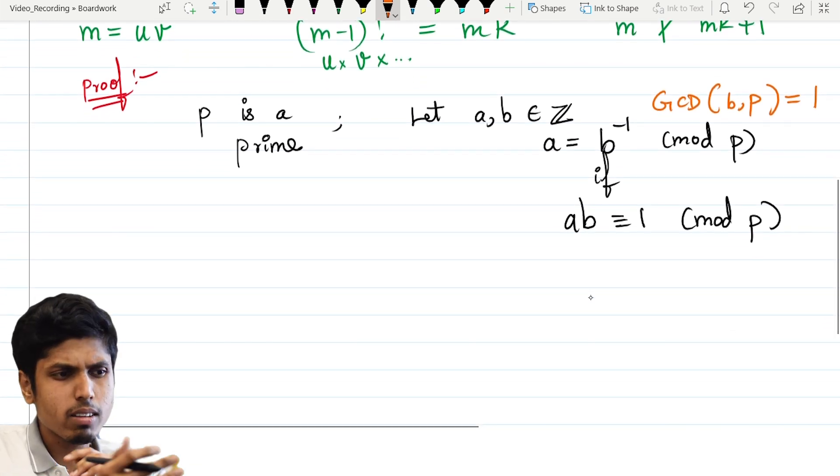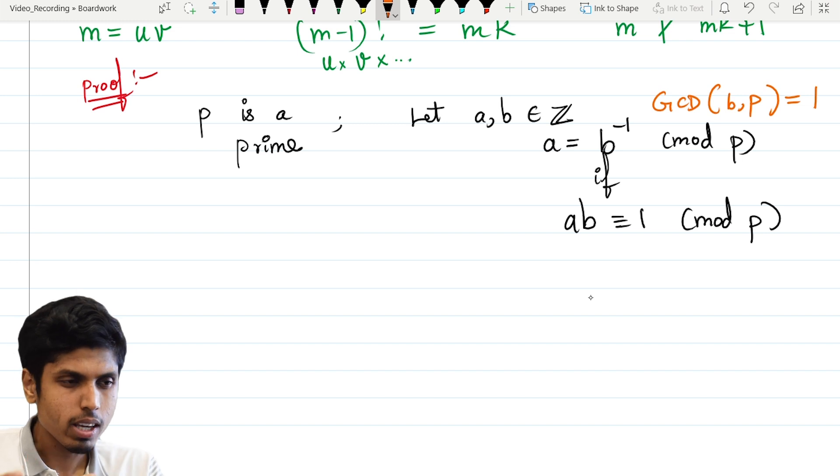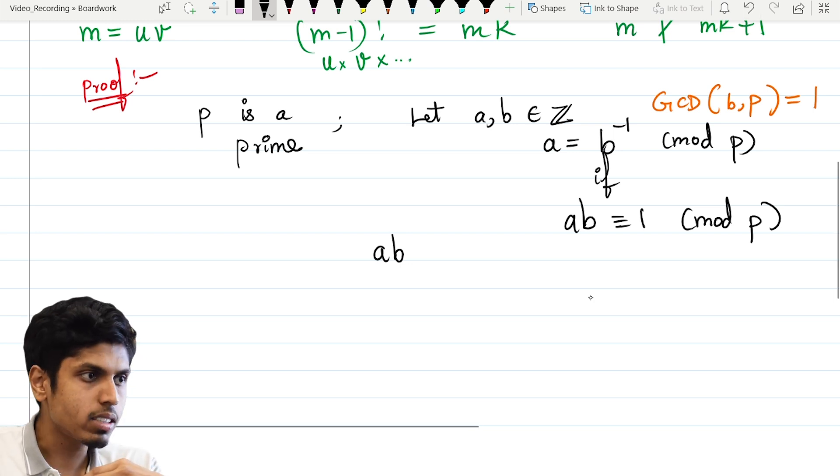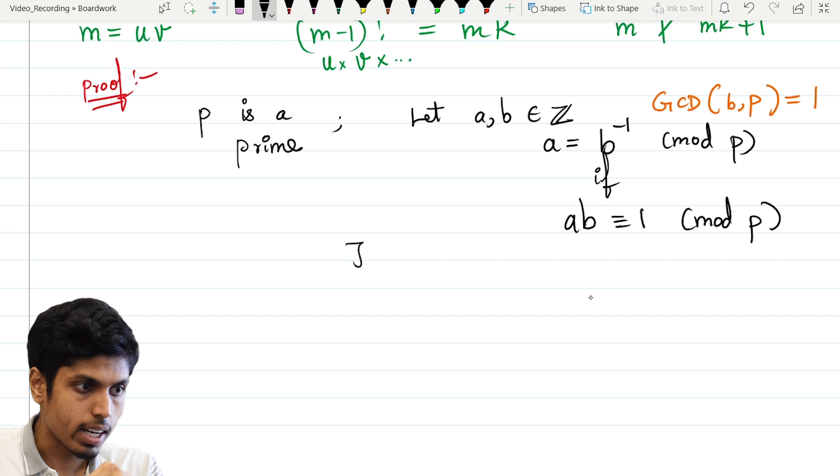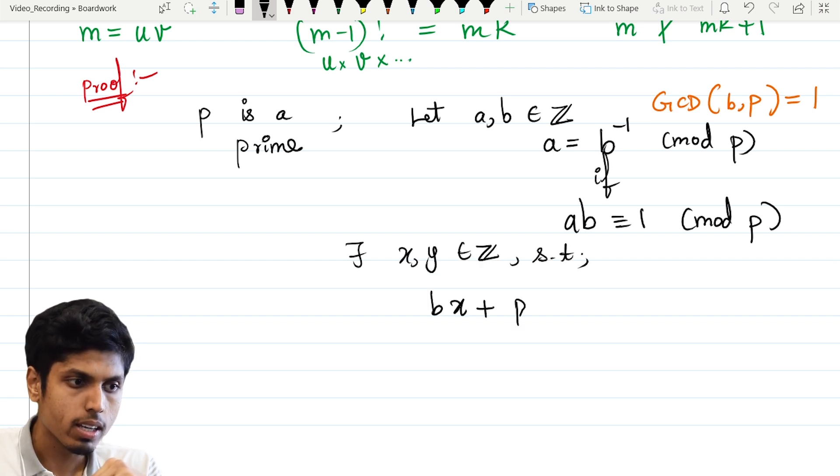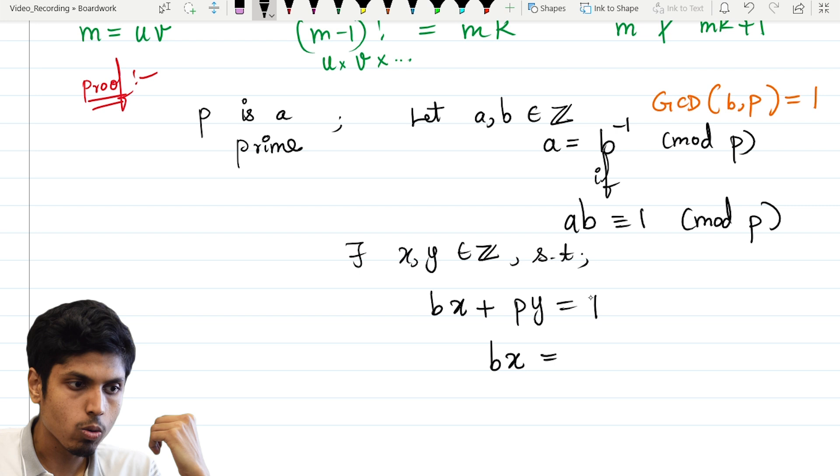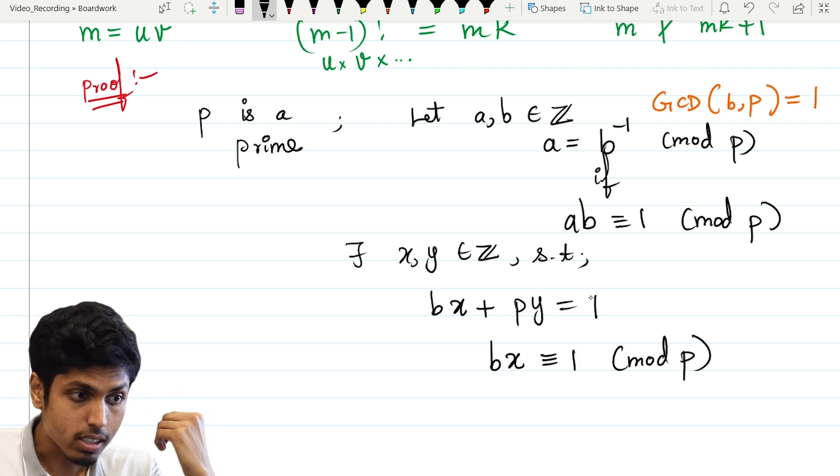Probably it can be understood using Bezout's lemma. So if you are not aware of Bezout's lemma, you can easily read that online. And Bezout's lemma tells us that since b and p are co-prime, there exist integers, say, x and y. There exist integers x and y such that bx plus py equals 1. And now if you consider modulo, then you would get bx being congruent to 1 mod p. So such a solution exists.